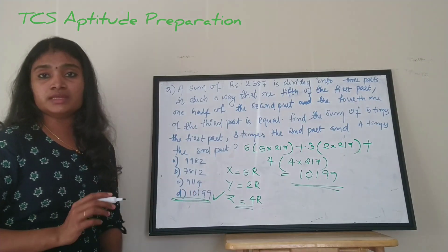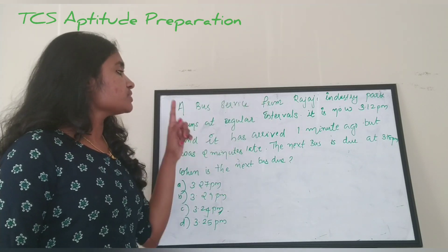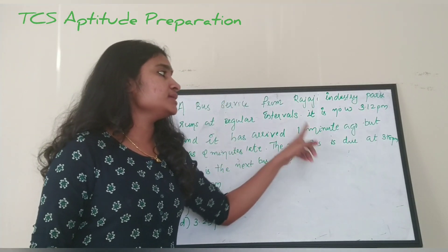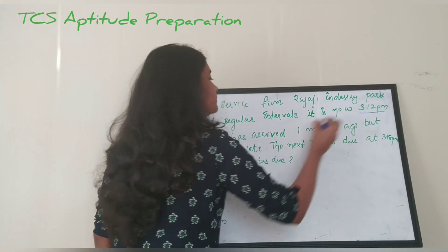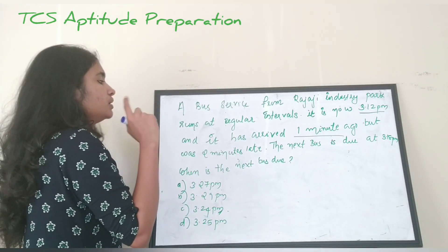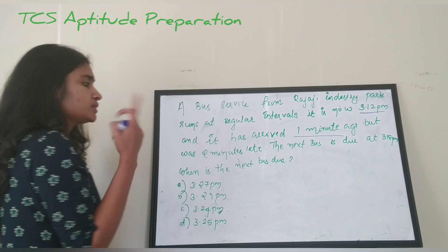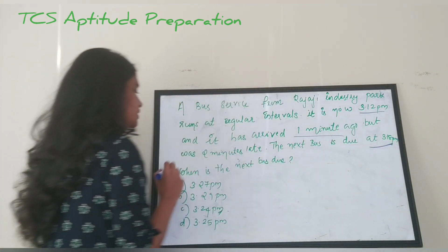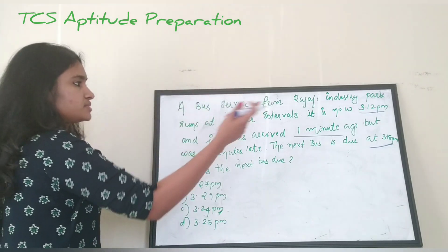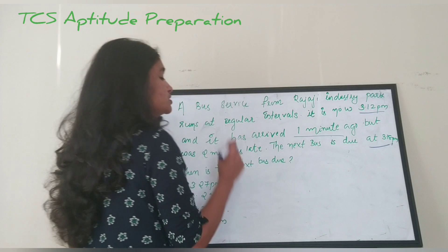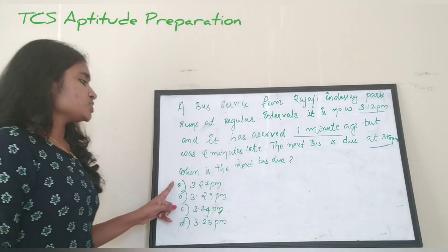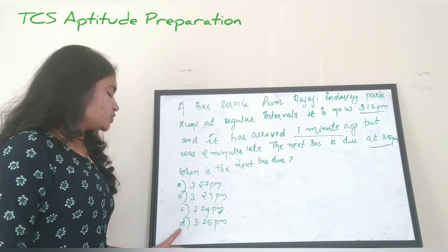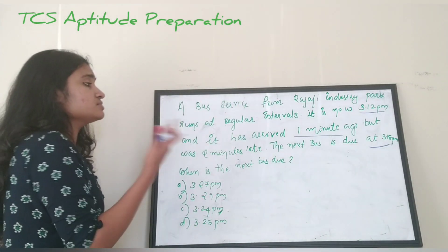Next question: A bus service from Rajaji Industry Park runs at regular intervals. It is now 3:12 PM and the bus arrived one minute ago but was two minutes late. The next bus is due at 3:18 PM. When is the bus due after that? The options are: A) 3:27 PM, B) 3:29 PM, C) 3:24 PM, D) 3:25 PM.